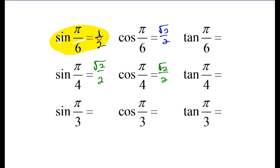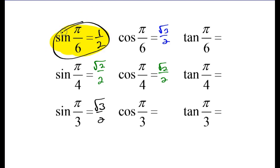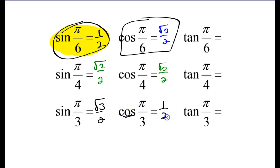The only thing you really need to remember from this video: the sine of pi/6 is nice (1/2), which forces the cosine of pi/6 to be not nice (√3/2). That forces the sine of pi/3 to be not nice (√3/2). And that in turn forces the cosine of pi/3 to be back to nice (1/2).